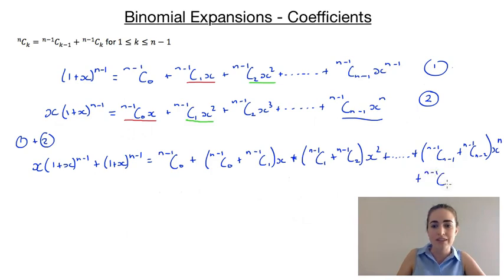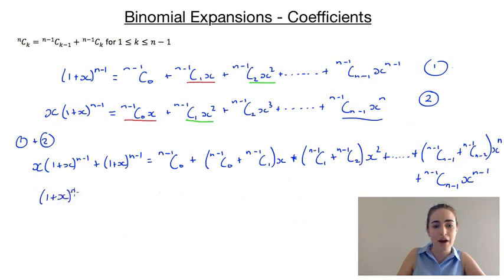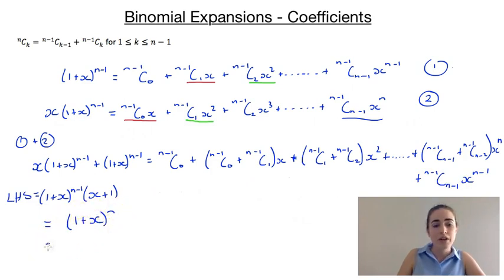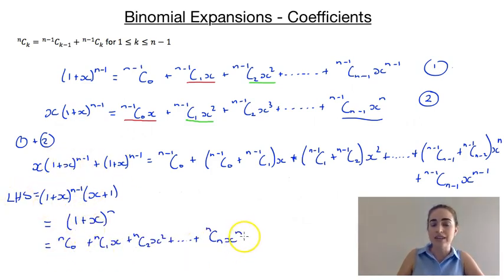And I'd also have plus (n minus 1)c(n minus 1) times x to the power of n minus 1. We can simplify the left-hand side — it has a common factor of 1 plus x to the power of n minus 1. So if we pull that out, we're going to end up with x plus 1 left, and since x plus 1 and 1 plus x are the same thing, that simplifies to 1 plus x to the power of n, adding the indices. So we have this equal to this whole expansion here. We also know the expansion of this, so if the left-hand side has to equal this, then this expansion has to equal the right-hand side.